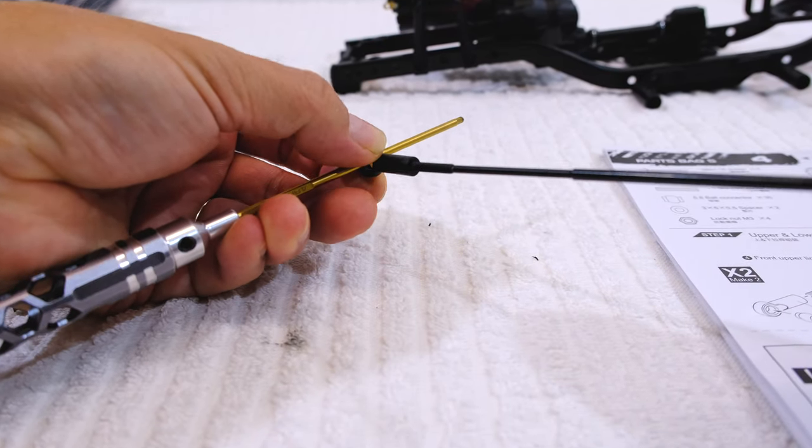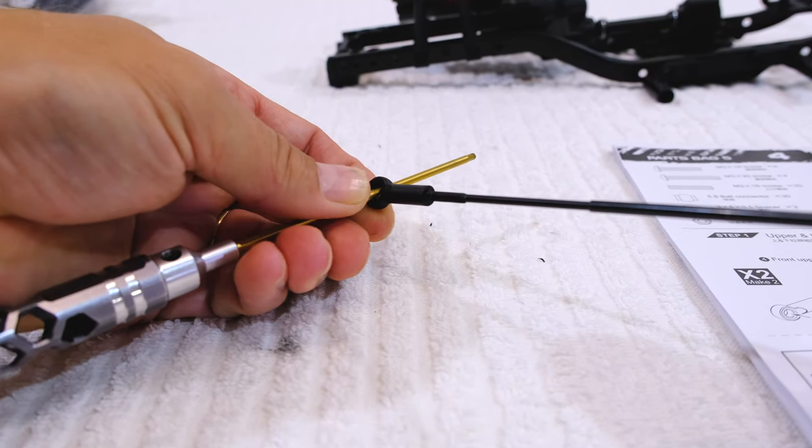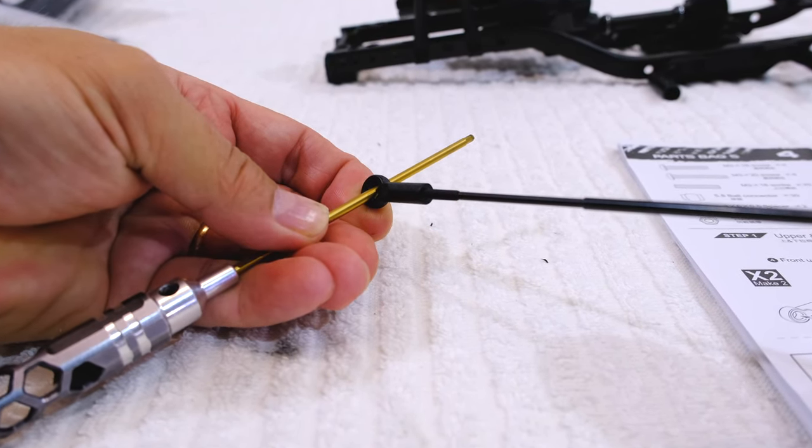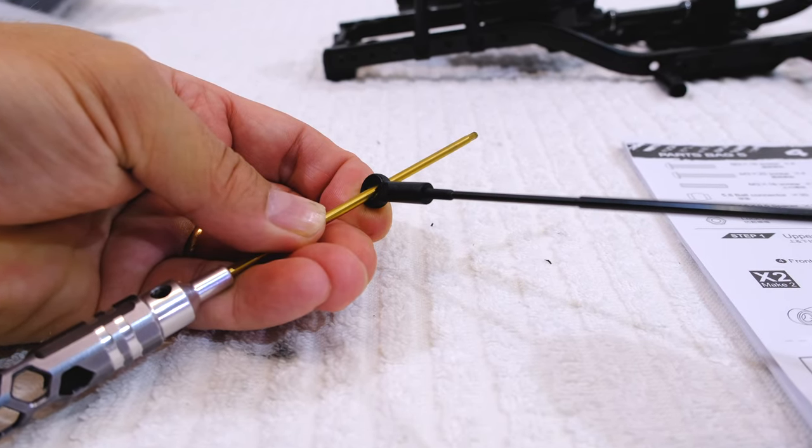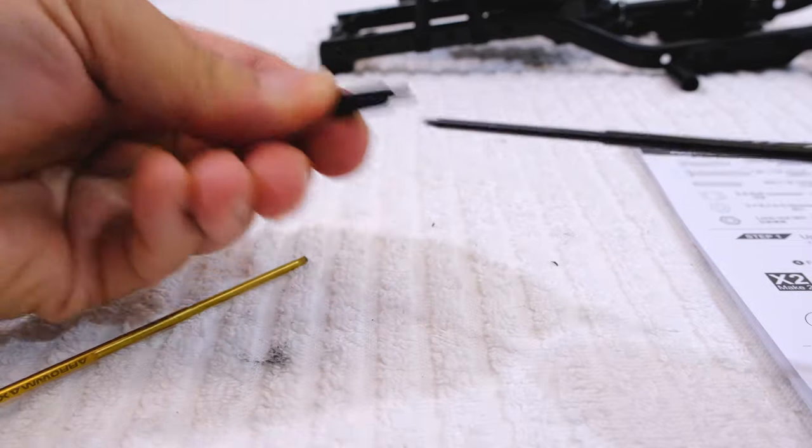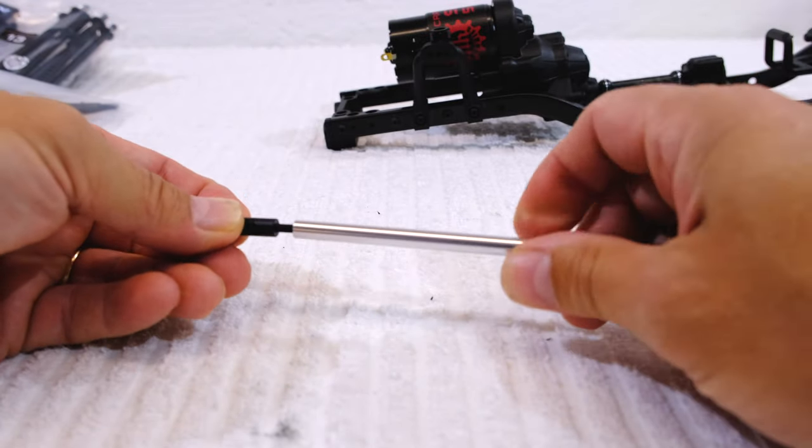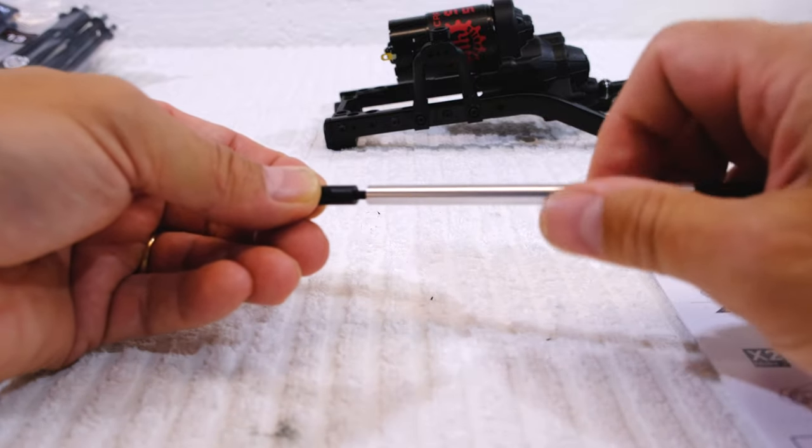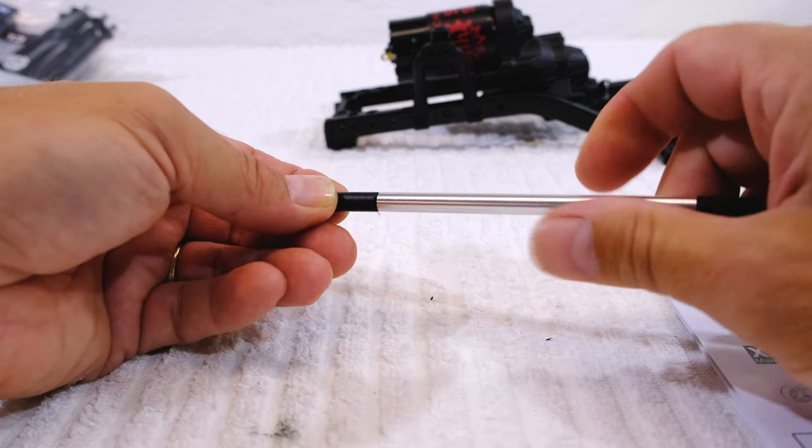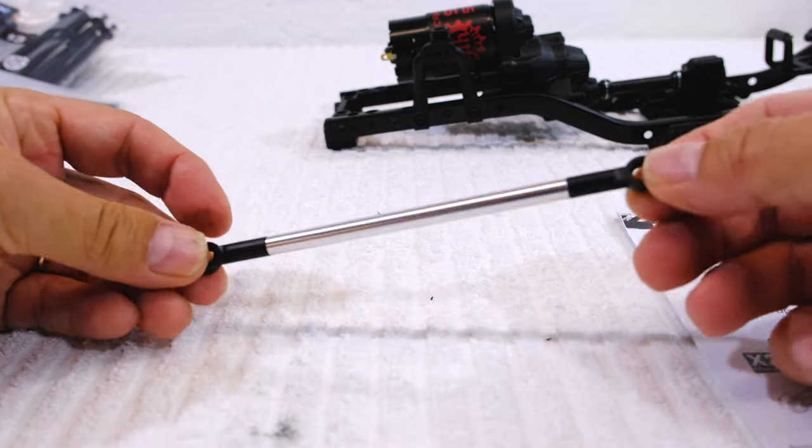First I screw in the socket bolt into the bolt connector. I screw it in about half way. Now I can screw the connectors to the aluminum links on both sides. And set the heads parallel to each other.